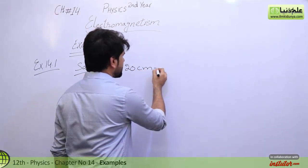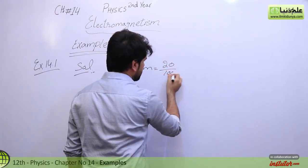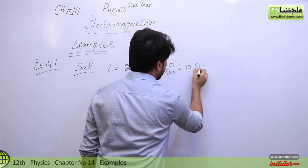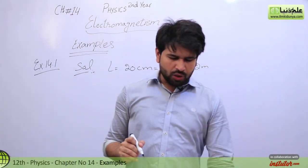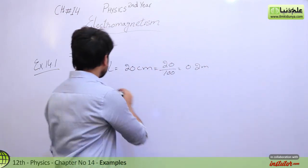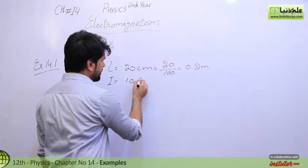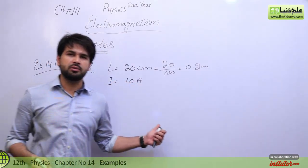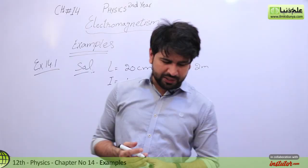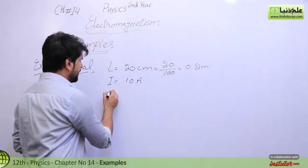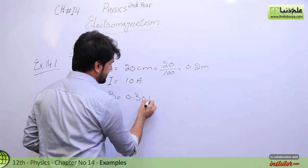The length of wire is 20 cm. We will convert this to meters by dividing by 100, so this is 0.2 meter. The current is 10 ampere. We represent current as I. So current is given as 10 ampere. Next, the magnetic field value: we represent B as 0.30 tesla.